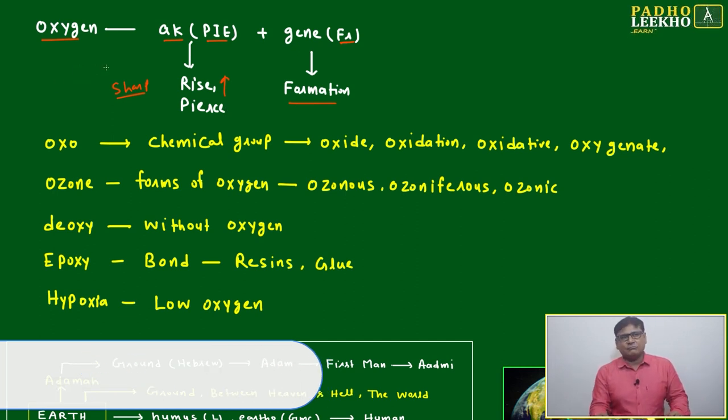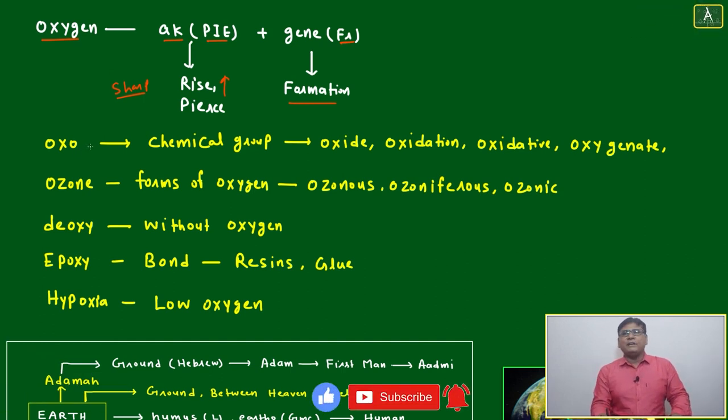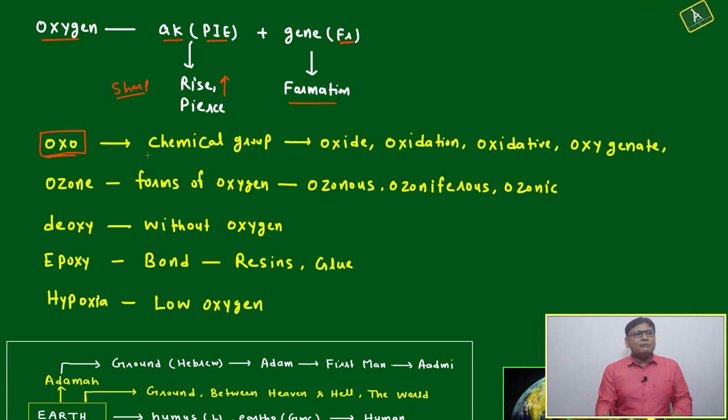Now the meaning of oxygen is only breathing gas. Also, it is a chemical group. Then based on 'oxo', multiple words will be created: chemical group oxide, oxidation, oxidative, oxygenate.